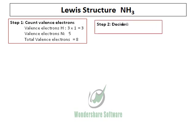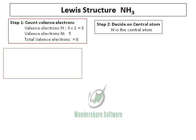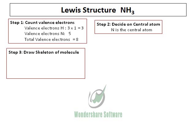Step 2 is to decide on the central atom, and the central atom in this case will be nitrogen. Once the central atom is decided, we have to draw the skeleton of the molecule. I have 1 nitrogen and 3 hydrogens, so we will just write down nitrogen bonded to 3 hydrogens as shown.